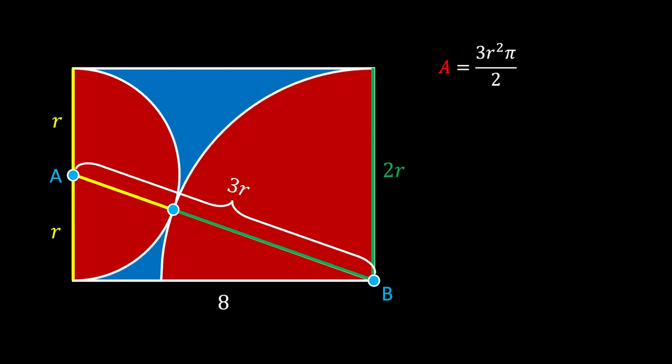Now we can see that we can form this purple right triangle with a hypotenuse of 3r and the legs of r and 8. We can now use the Pythagorean theorem and say that the quantity of 3r squared is equal to r squared plus 8 squared.